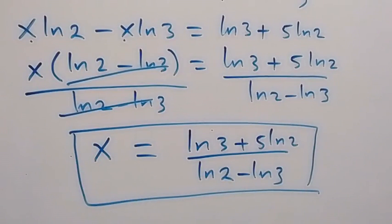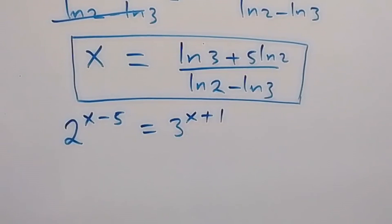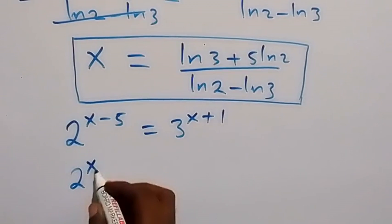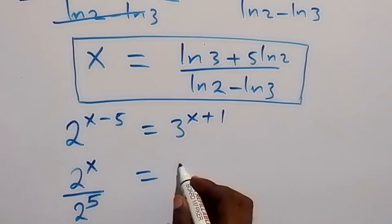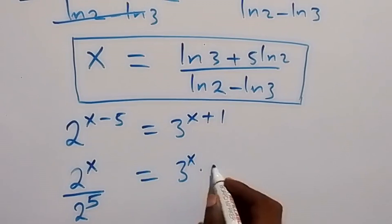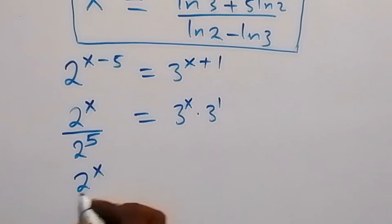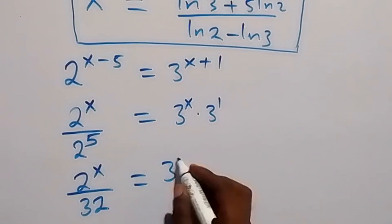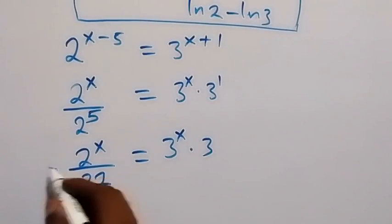Using the second method, from 2 raised to power x minus 5 equals to 3 raised to power x plus 1, we can write this using the law of indices. This becomes 2 raised to power x over 2 raised to power 5, and also we can write the right side as 3 raised to power x times 3 raised to power 1.